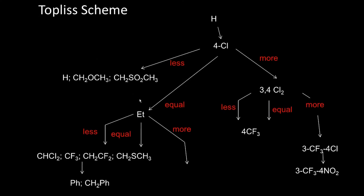There is another approach called the Topliss scheme. We imagine we have a parent compound where we replace H with, say, 4-chloro. The activity may be increasing, decreasing, or the same. If it is more, then you know that chloro in the 4th position has an effect, so we can have 2 chloro substitutions at the 3rd and 4th positions. Again, activity can be increasing, equal, or can even go down.